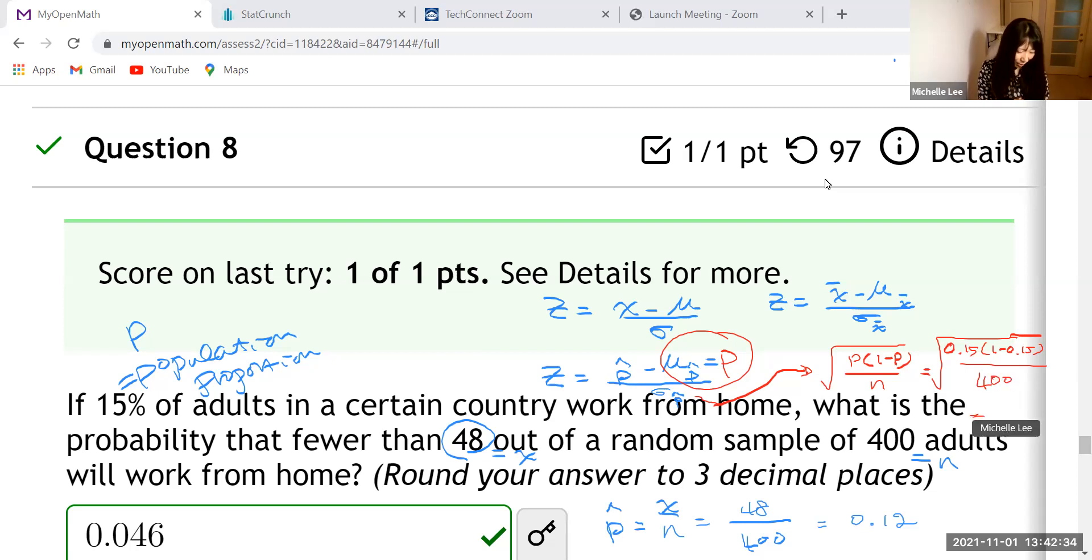So let us calculate. 0.15 times 1 minus 0.15. Then we divide by n, which is 400. Then we make a square root for the answer. So we have this one, which is 0.0179.